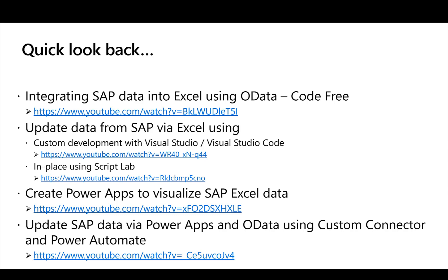Then we looked at creating a Power App that accessed the SAP data available in Excel, and we could create a beautiful application without writing one single line of code — running on a Windows laptop, as a mobile application, or in a browser. We also looked at how to update SAP data from Power Apps using OData and the custom connector of Power Automate.